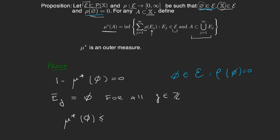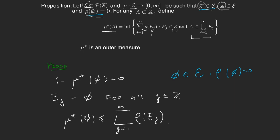Since A is the empty set and I found a specific cover of the empty set, μ*(∅) is less than or equal to the sum of ρ(E_j). But since each E_j equals the empty set, ρ(E_j) = 0, and also μ* is always greater than or equal to zero. So this gives us μ*(∅) = 0, finishing the first property.